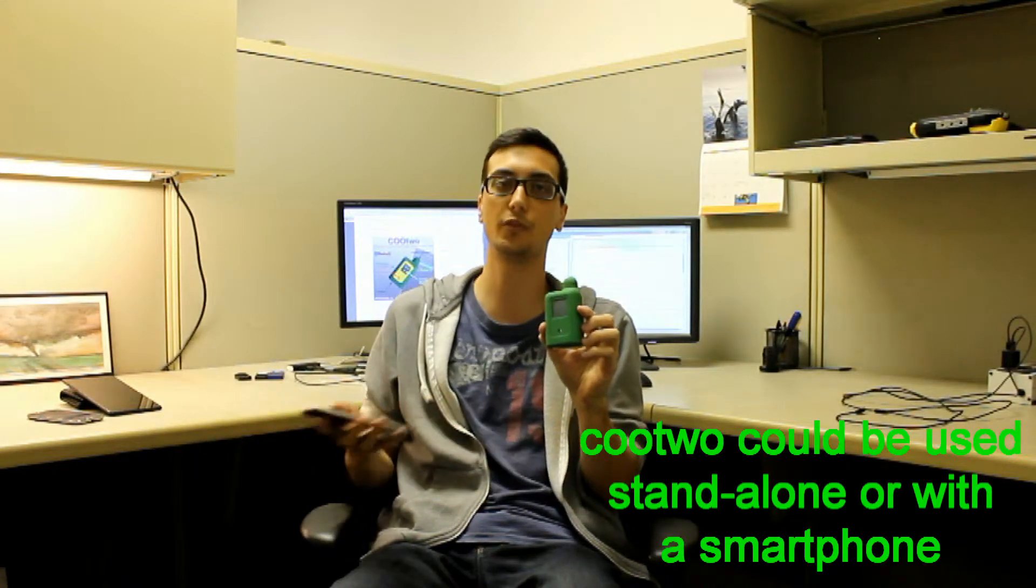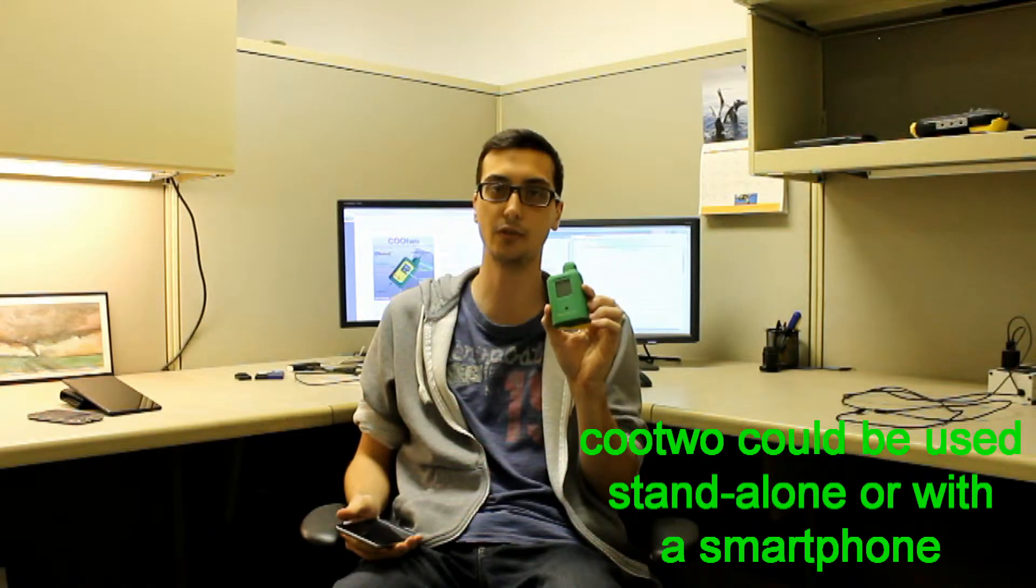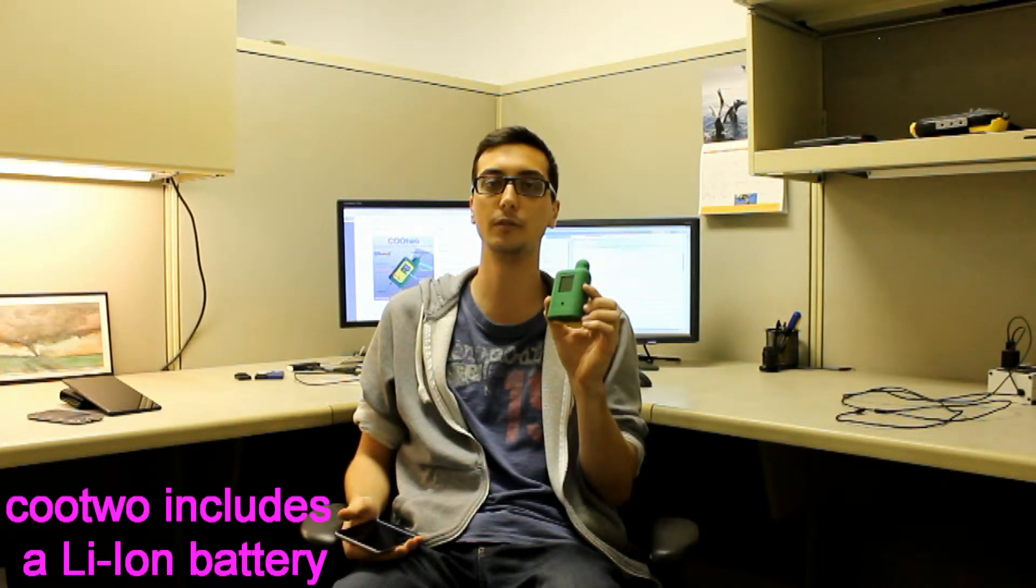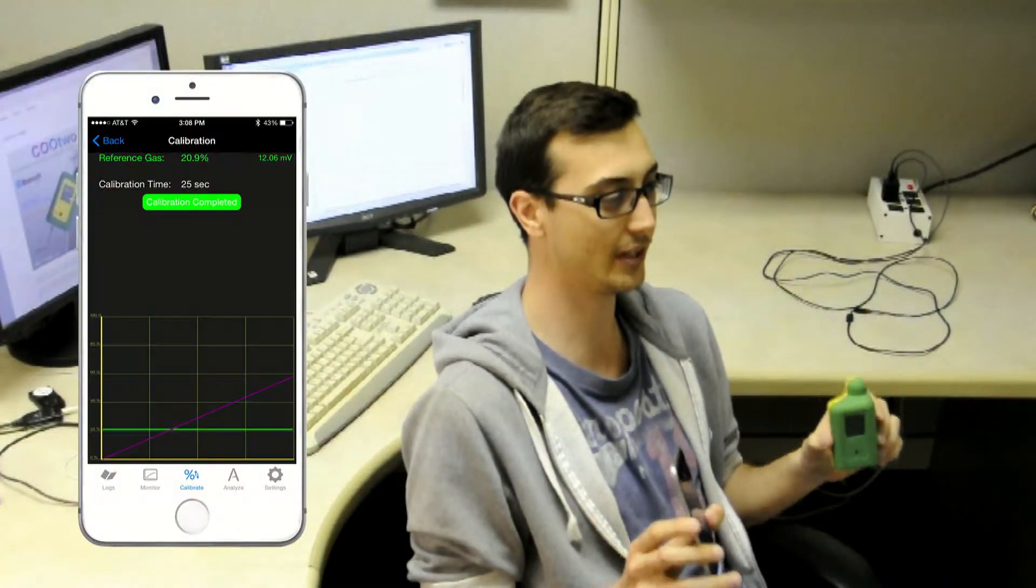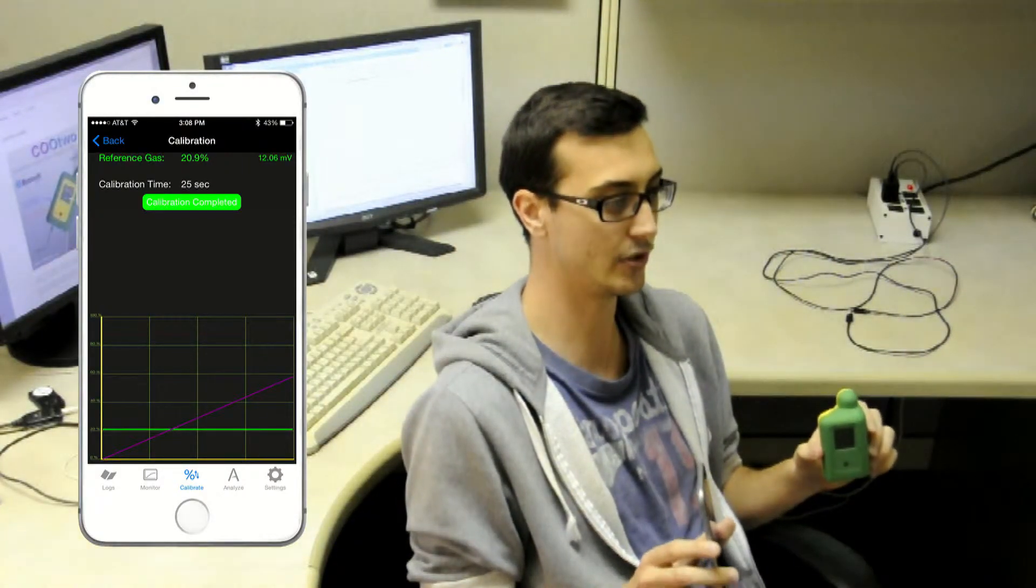It can be used with a smartphone or as a standalone device as it has its own display. KU2 includes a rechargeable lithium-ion battery and is compatible with our existing My Nitrox Buddy app which is available for both iOS and Android devices.